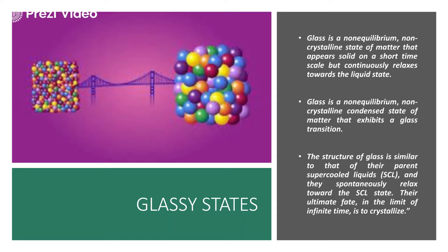Basically, what happens is that silicon dioxide, once it is melted down from solid to the liquid state, the intermittent state observed is the glass state. That is why it is known as the non-equilibrium, non-crystalline state of matter — because it exists for only a short period of time. Since it is a condensed state of matter, it exhibits a transition temperature, which is the temperature at which the glass is formed.